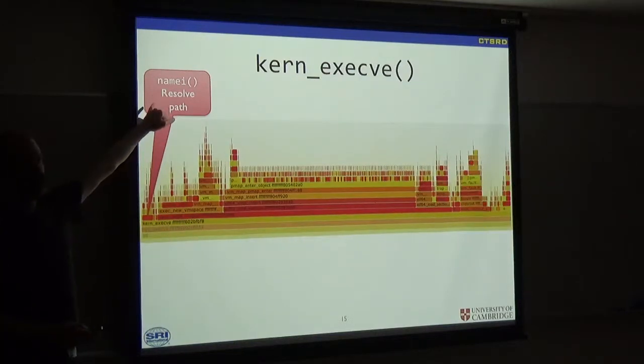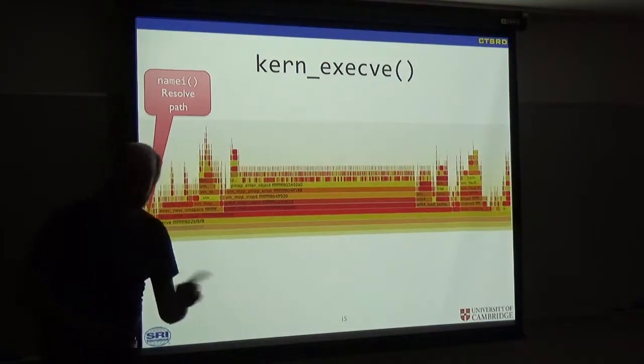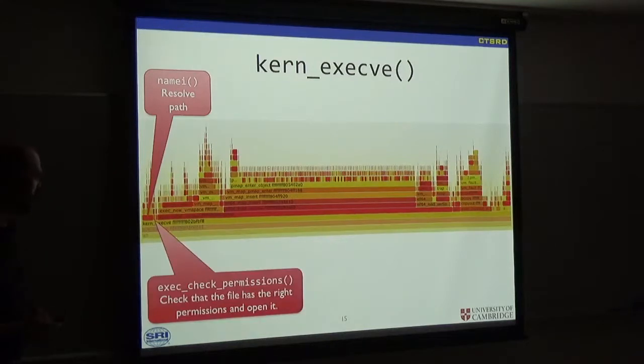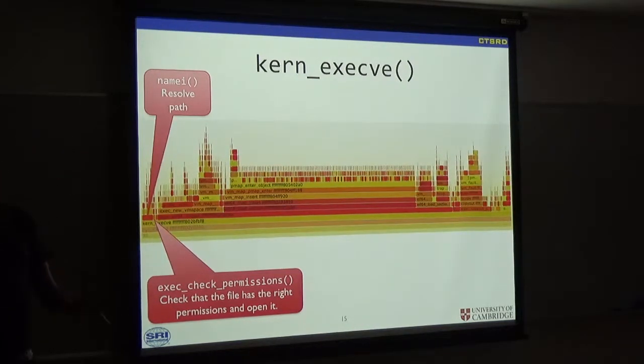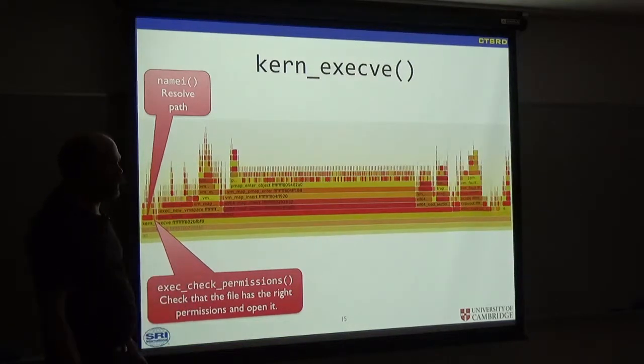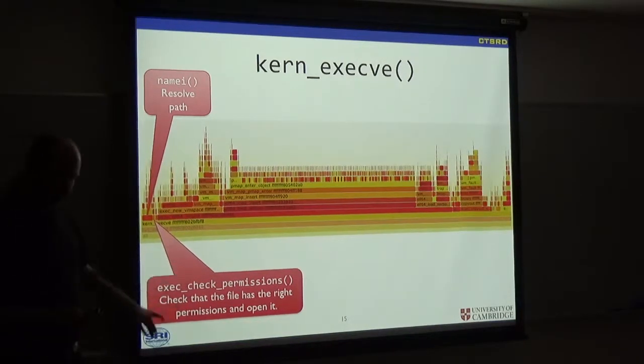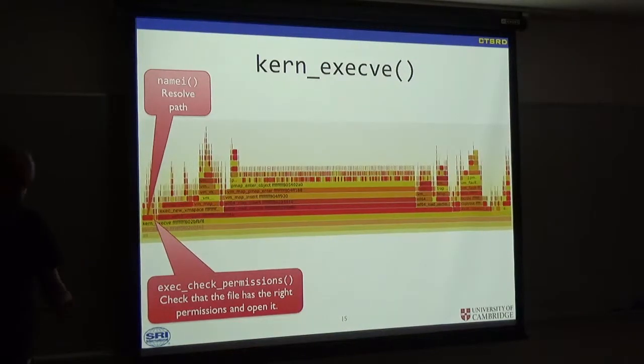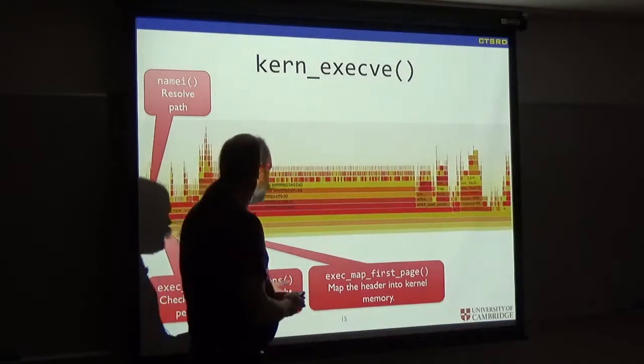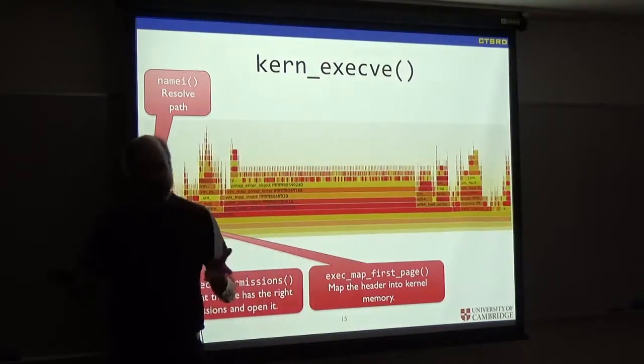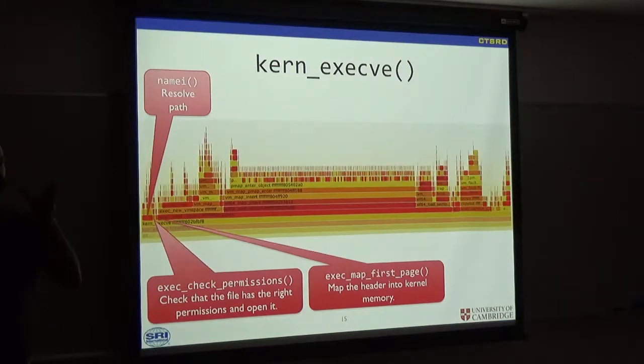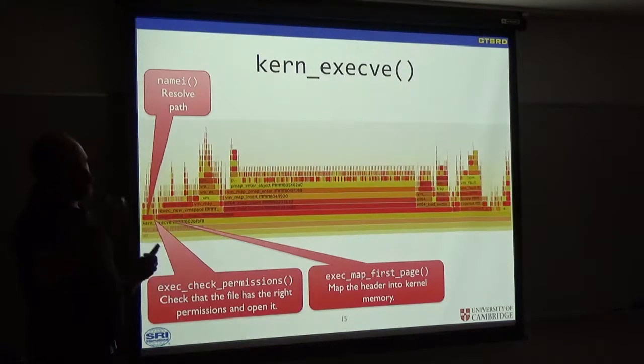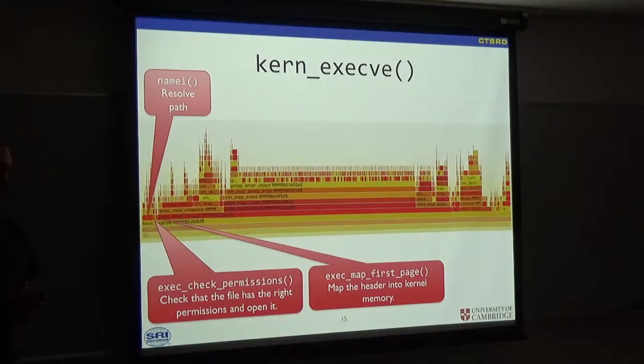Next, there's exec_check_permissions. It's a slightly misnamed function, which checks the file has the right permissions, that it's executable, and it's readable by you, and then it opens it. And then there's exec_map_first_page. It takes the first bit of the executable and passes it into memory, so that it can start to parse the executable and figure out what sort of thing it is.